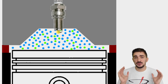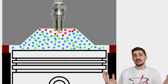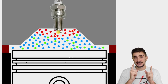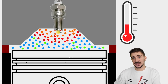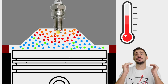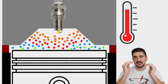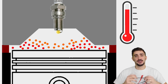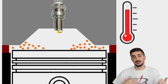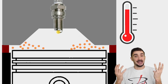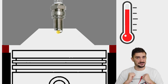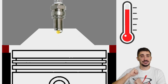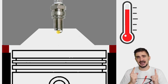A higher compression ratio contributes to a more complete burning of the air-fuel mixture, but this, as a consequence, results in increased combustion temperatures. The more we compress the air-fuel mixture, the better it burns, and the better it burns, the hotter it burns. The upside of this is, of course, increased power potential and increased efficiency.